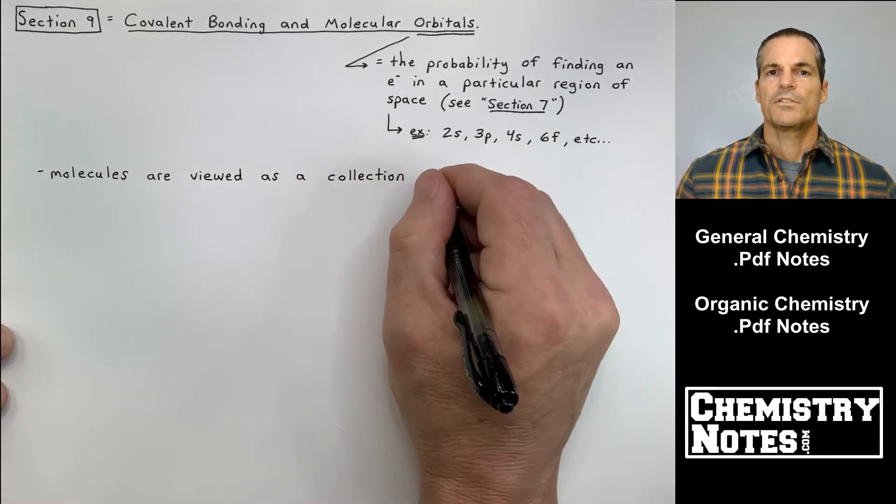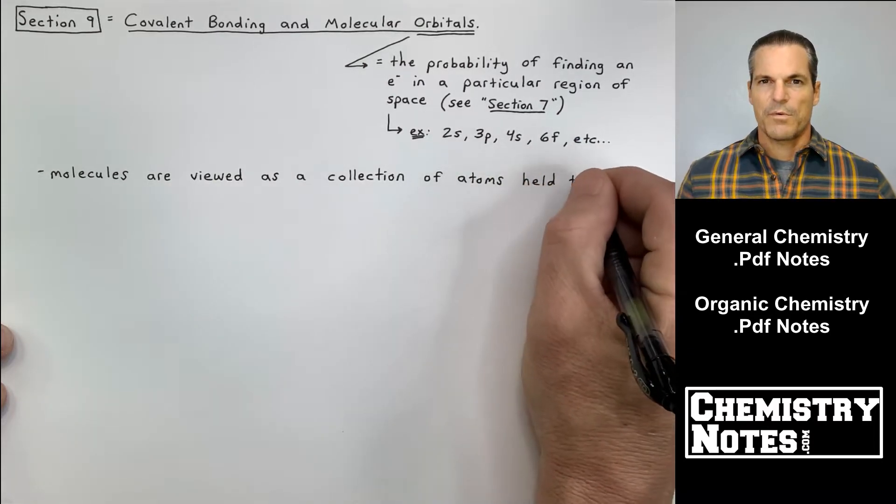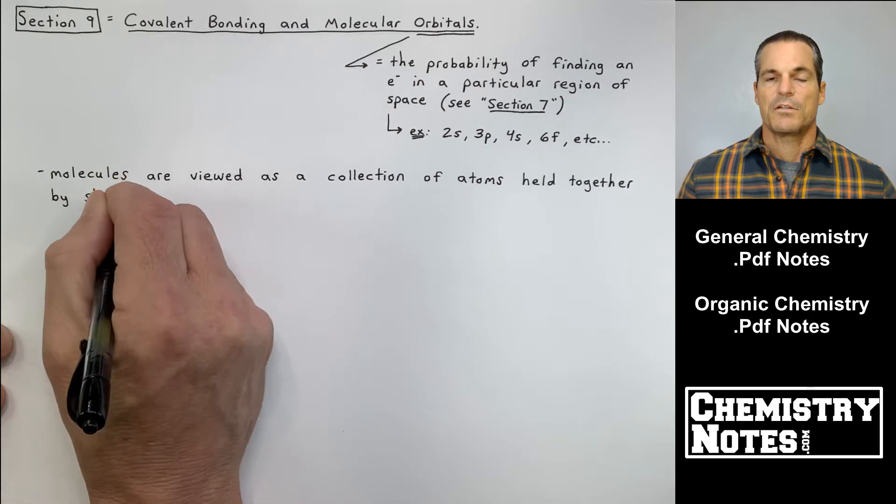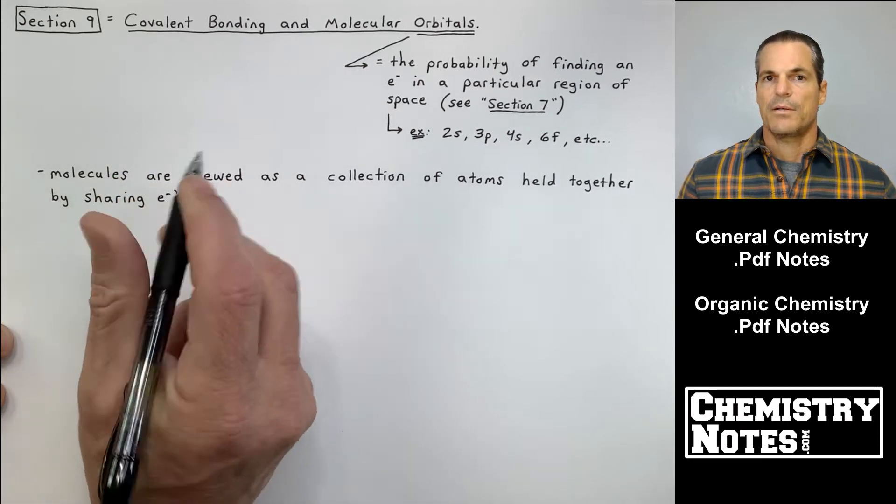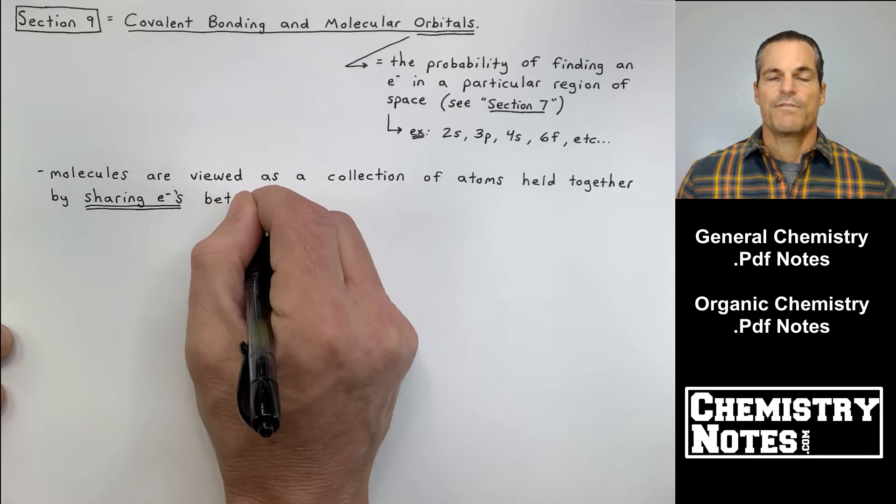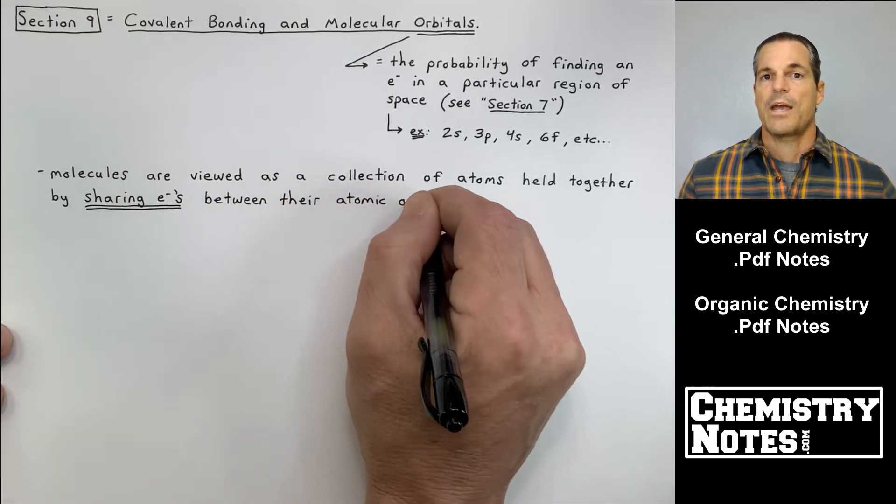So first let's make a few background statements, some of them a review of section 7 and section 8. Then let's get into something called the localized electron model and hybridization. Before we do that, we have to make a few statements that prepare us to talk about hybridization.